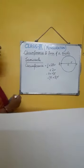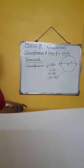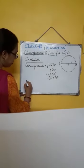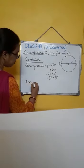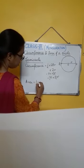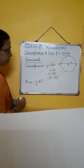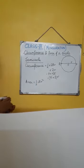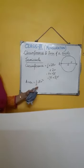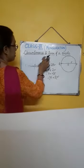In the case of a semicircle, the circumference is πr + 2r. The area of a semicircle is half into πr², that is (1/2)πr².